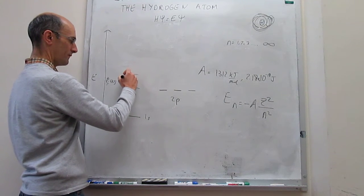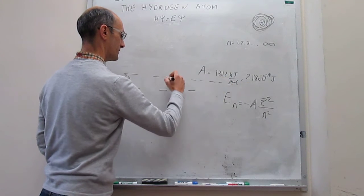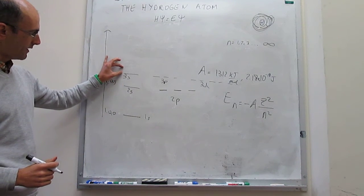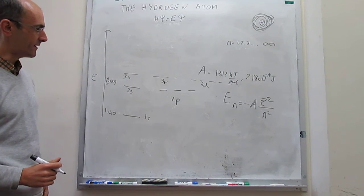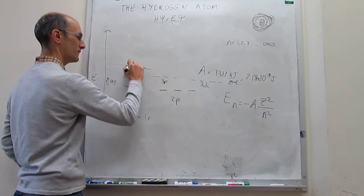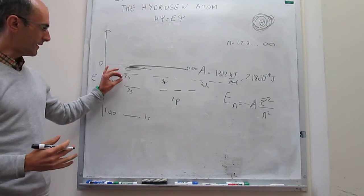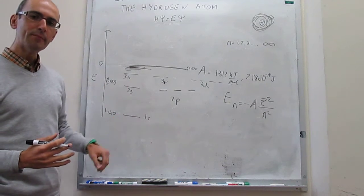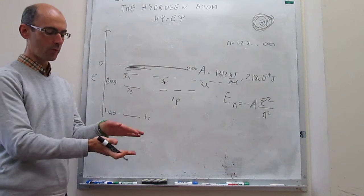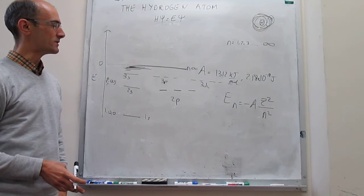As we move higher, we have the 3s, 3p, and 3d solutions — and again, all of those are degenerate. Something interesting is that the energy spacing becomes smaller as you move higher in energy. The 4s and 5s levels follow, and eventually you reach N equals infinity, which corresponds to an energy of zero. The separation between energy states becomes increasingly smaller as you move up in the principal quantum number. This is different from other quantum systems — for example, in the particle-in-a-1D-box model, the energies become increasingly more separated as you move up. Here it is exactly the opposite.